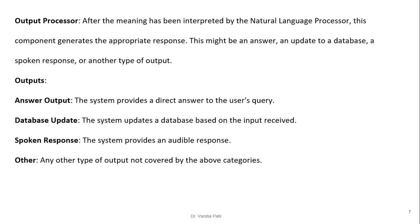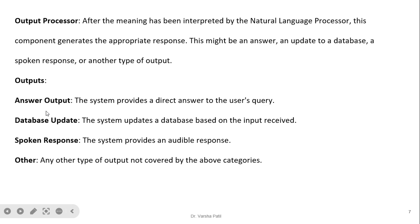Output processor: after the meaning has been interpreted by the natural language processor, this component generates the appropriate response. This might be an answer, an update to a database, or a spoken response, or another type of output based on a particular application. Answer output: the system provides a direct answer to the user query in text format. Database update: the system updates a database based on the input received. Spoken response: the system provides an audible response. Other: any type of output not covered by the above categories.